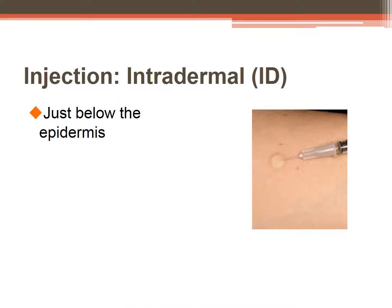The intradermal injection is given just below the epidermis into the dermis and is used for TB or allergy testing. TB tests may be called PPDs because the tuberculin solution is purified protein derivative — an extract of mycobacterium tuberculosis, the bacteria that causes tuberculosis in humans. For an intradermal injection, the needle is inserted at a 10 to 15 degree angle. You do not aspirate; you slowly inject the medication forming a wheal, which is a slight elevation in the skin. The forearm is used for PPDs.